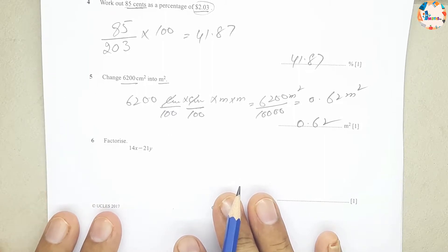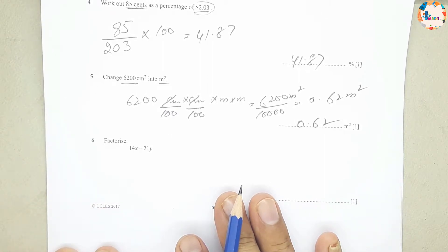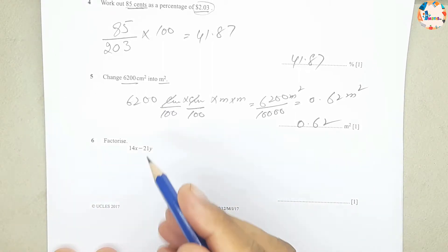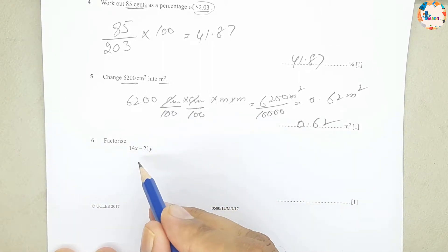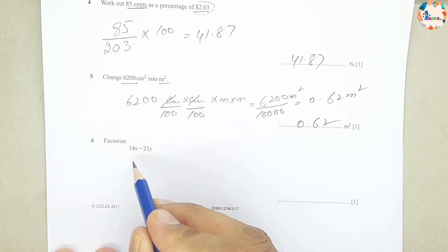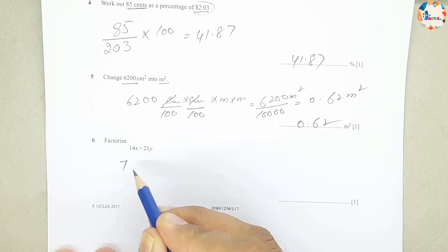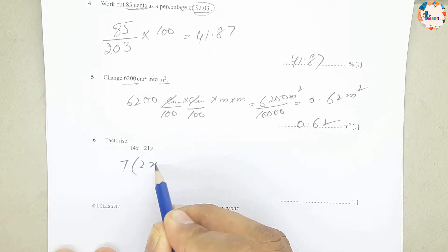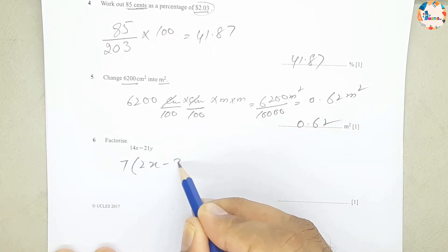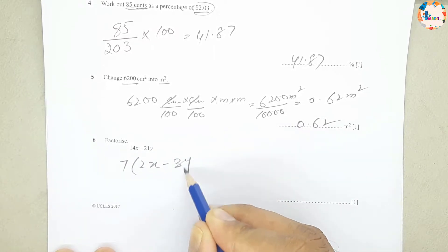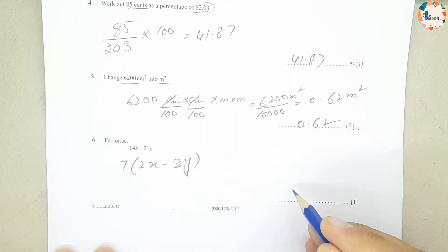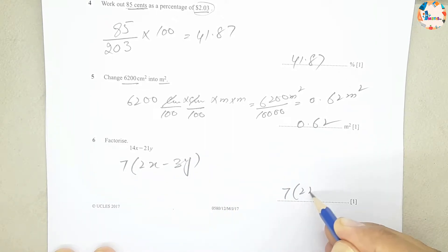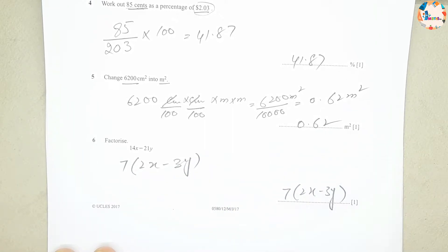Question number 6: factorize. The highest common factor we can take out is 7, giving 7(2x − 3y) as our answer.